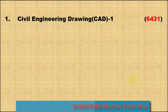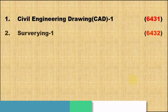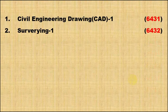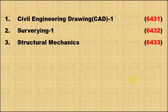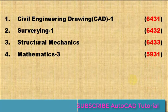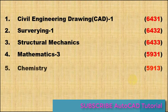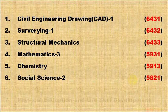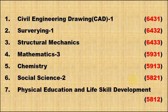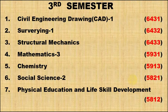Third semester: Civil Engineering Drawing Pad 1 (6431), Surveying 1 (6432), Structural Mechanics (6433), Mathematics 3 (5931), Chemistry (5913), Social Science 2 (5821), Physical Education and Life Skill Development (5812).